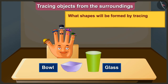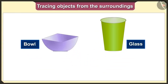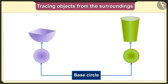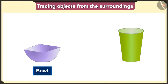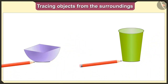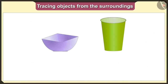Now let's look at another example. Which shapes would we get if we put this bowl and glass straight and upside down and then trace them? If we keep the bowl and glass straight like this, their base is a circle. So if we keep the bowl and glass upright and trace them, we will get a circle shape.